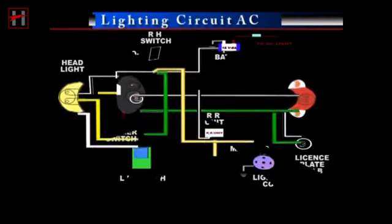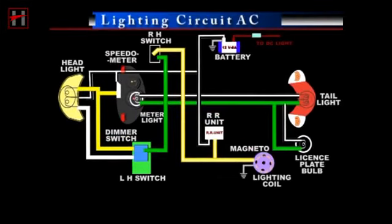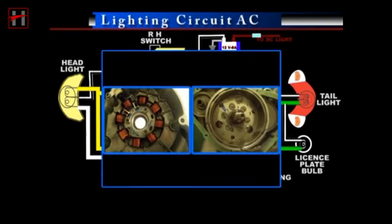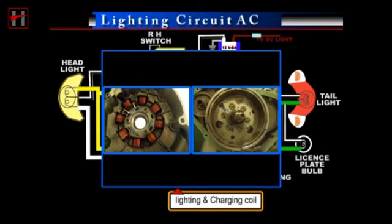This is the lighting circuit AC of Suzuki Scooter AXS 125. The lighting circuit AC consists of the lighting and charging coil,